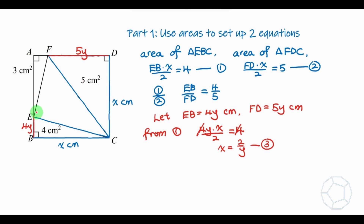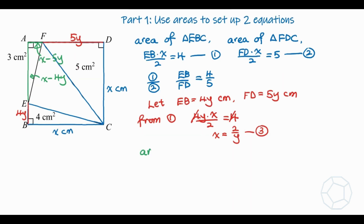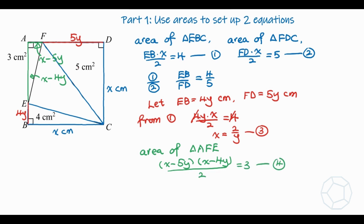Now let's focus on the two sides AF and AE, highlighted in green. Since AD and AB are side lengths of the square, both equal x. Therefore AF = x − 5y and AE = x − 4y. Considering the area of triangle AFE, base times height over 2 gives: (x − 5y)(x − 4y) / 2 = 3. This is equation four.